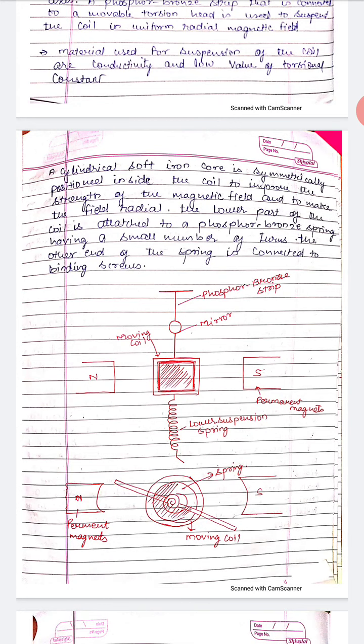A cylindrical soft iron core is symmetrically positioned inside the coil to improve the strength of the magnetic field and to make the field radial.